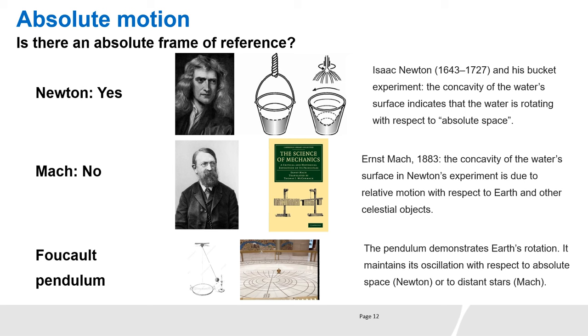Newton proposed the following experiment with a bucket of water. Let's suppose that the bucket rotates. Because of water viscosity and because of friction, the water starts to rotate. And due to the inertia, water wants to keep moving in straight direction. It is prevented by the wall of the bucket. This makes the water climb and we see the concavity of water surface. If the bucket stops rotating, the water continues to rotate for a certain time and the concavity of water surface remains.